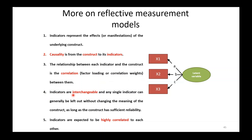Number four: indicators are interchangeable. If you detect any non-contributing items in a reflective measurement model, you can simply delete them from the model as long as the construct has sufficient reliability. Number five: indicators are expected to be highly correlated to each other, so x1, x2, and x3 are highly correlated.